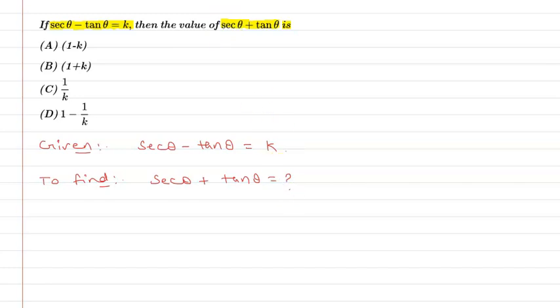What do I do? The sec or tan related identity is 1 plus tan² θ equals sec² θ. So if I use this, then I can find it.